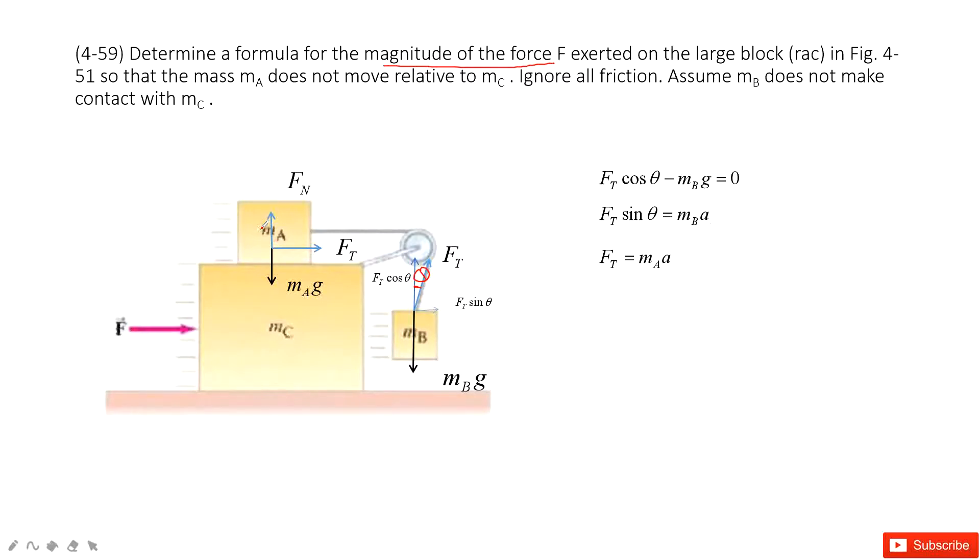Then we look at object B. And object B, you can see the only force acting on it in horizontal is Ft. So Ft equals mass times acceleration. So we have these three equations, and we can solve the acceleration. From these two, we can get acceleration equals G tangent theta, right? G tangent theta.